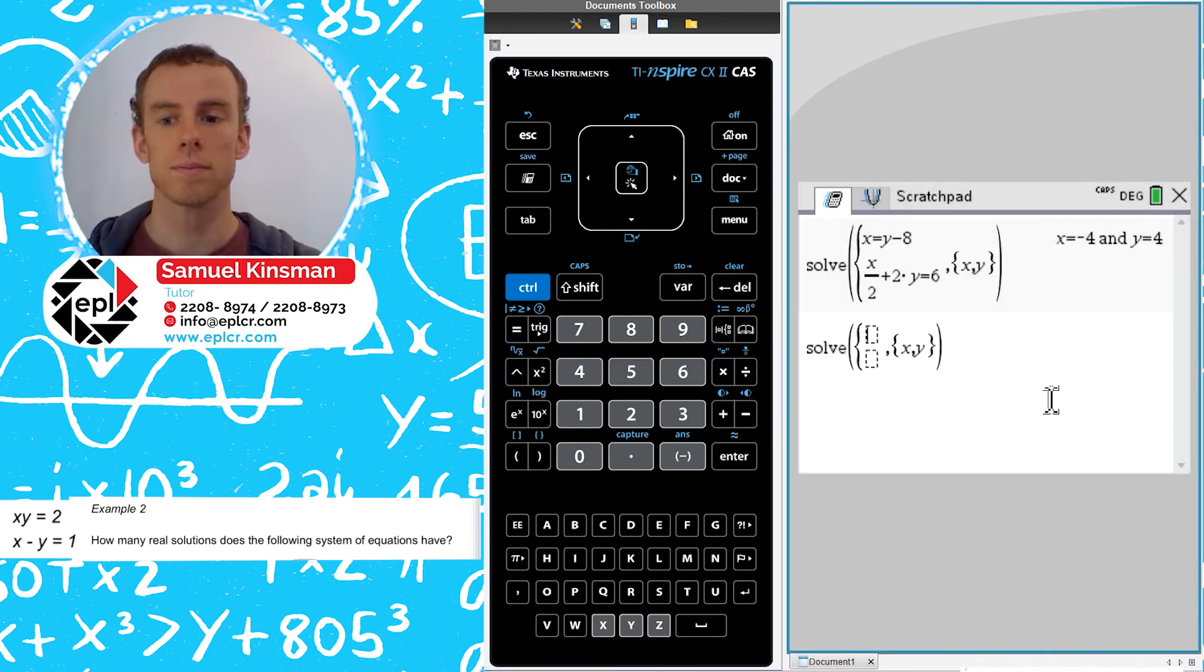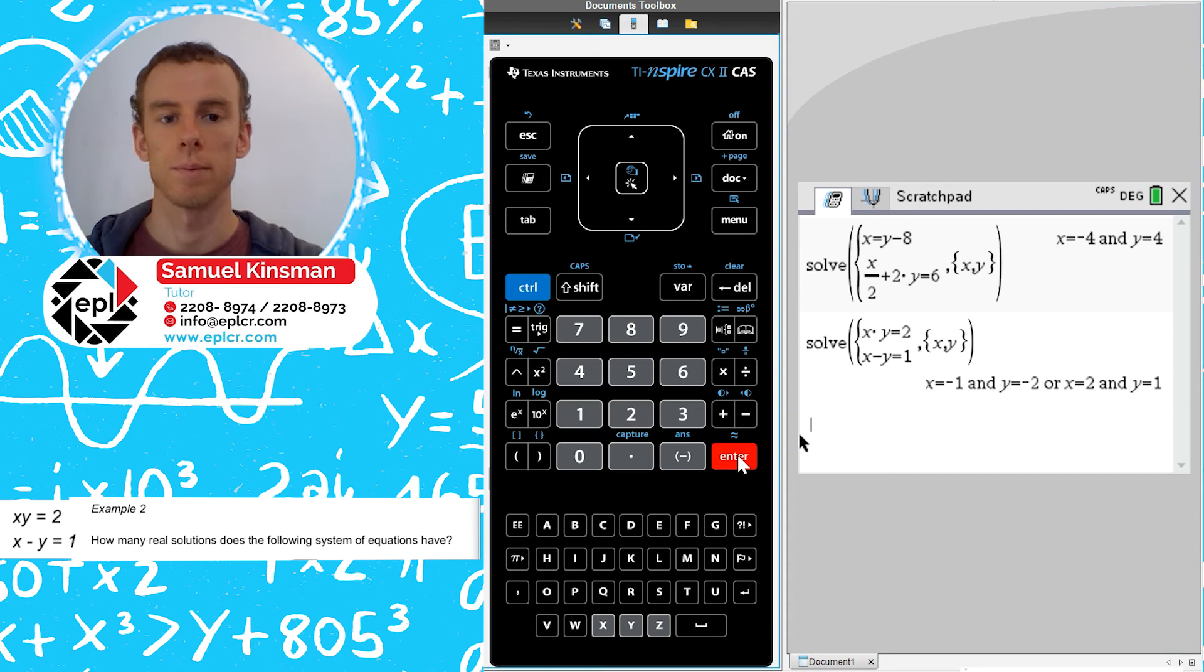And here we're going to type in x times y equals 2, x minus y equals 1, and we press enter. And now you can see that it's given us two pairs of x, y points. So therefore we know there's two solutions, and the answer to this one is C.